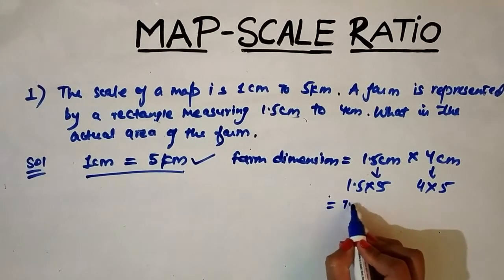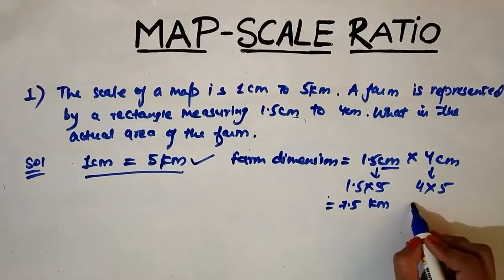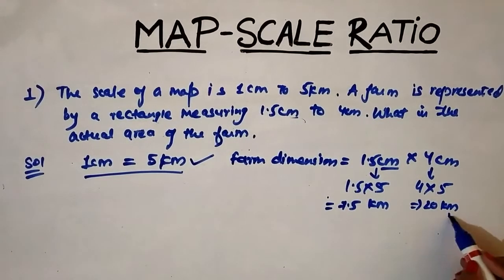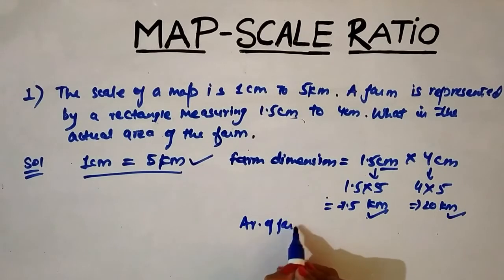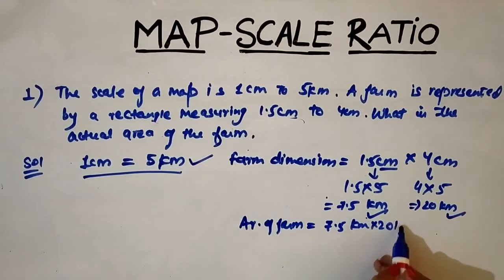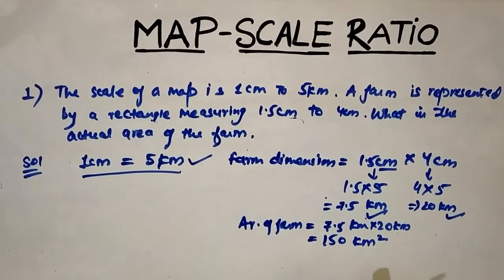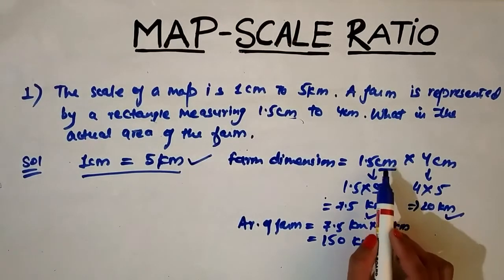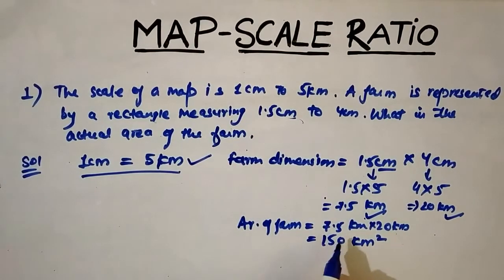So 1.5 centimeters becomes 7.5 kilometers, and 4 centimeters becomes 20 kilometers. This gives us the length and breadth in kilometers. The area of the farm equals length times breadth, that is 7.5 kilometers times 20 kilometers, which is 150 kilometers squared. This is the actual area of the farm. We first converted centimeters to kilometers using the given scale, then calculated the area.